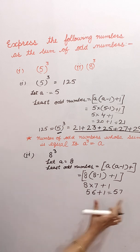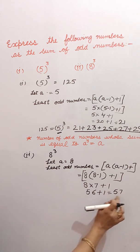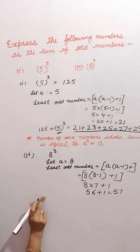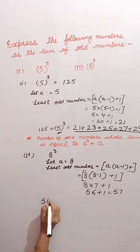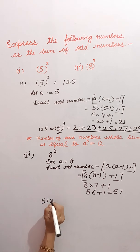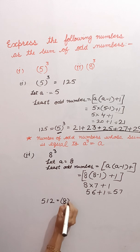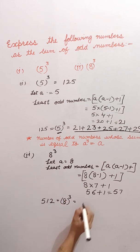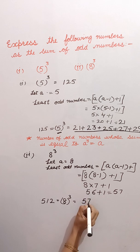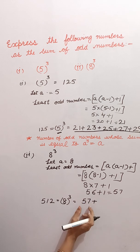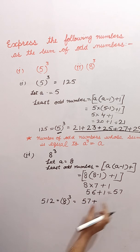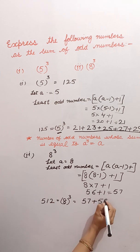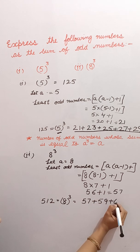So the least odd number is equal to 57. So 512 — that is equal to 8 cube — will equal starting from 57. We will start from 57, taking 8 numbers: 57, 59, 61...